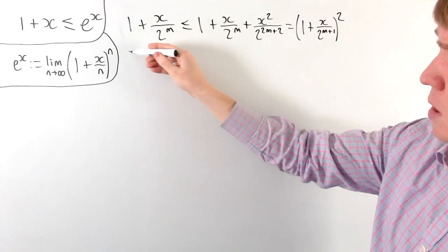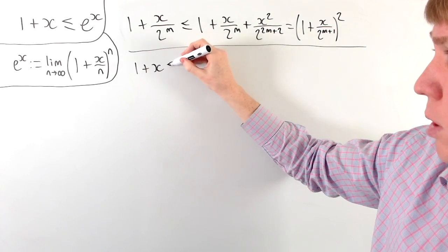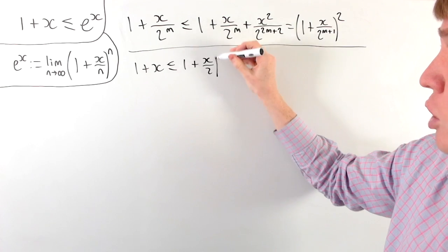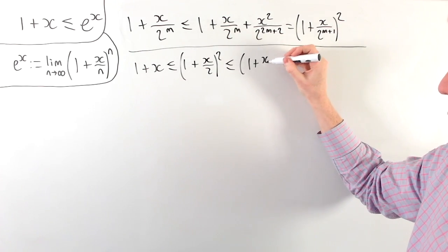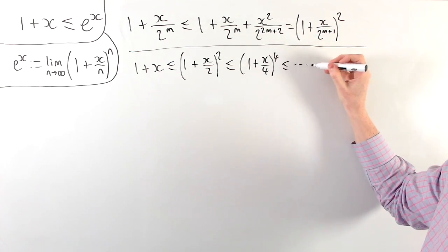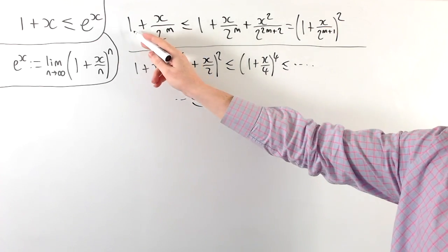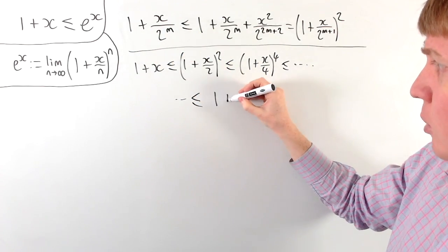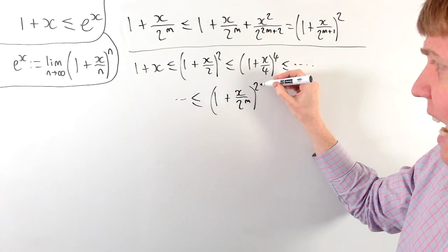This is particularly useful because we have a chain of inequalities: 1 plus x is less than or equal to 1 plus x over 2 all squared, which is less than or equal to 1 plus x over 4 all raised to the power of 4, and so on — and this is going to be less than or equal to 1 plus x over 2 to the m all raised to the power of 2 to the m.